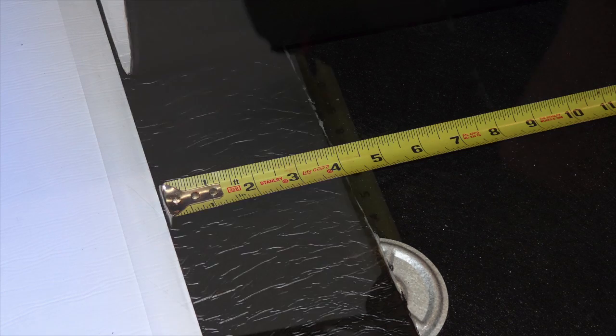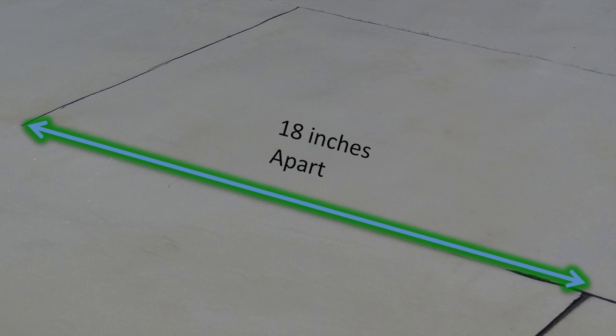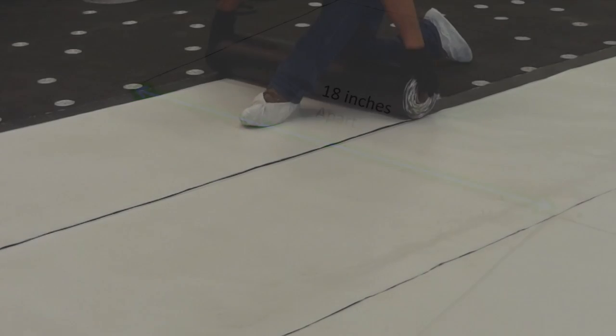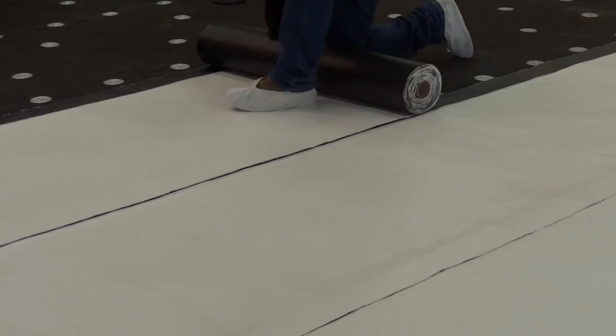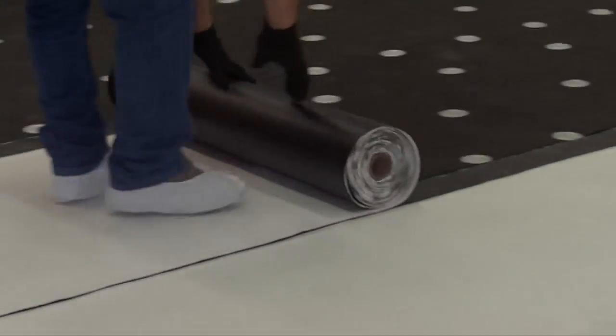Membranes should be overlapped 4 inches on the sides and 6 inches on the ends. Stagger adjacent end laps a minimum of 18 inches apart so that no adjacent end laps coincide. Once proper alignment is achieved, back roll the membrane keeping the roll tight without forming a cone when re-rolling.